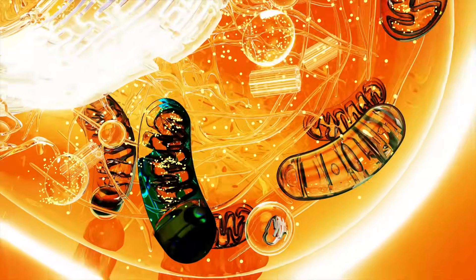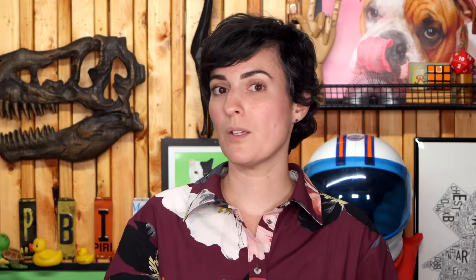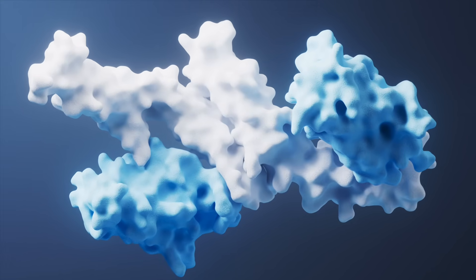But here's the problem: most of the chemical reactions that make life possible happen way too slowly on their own. That's where enzymes come in. Enzymes are proteins that act like tiny biological catalysts. Their job? Speed up reactions by lowering the activation energy. Think of it like reducing the height of a hill so a ball can roll over it with more ease. Without enzymes, your cells wouldn't be able to function fast enough to keep you alive. Now, enzymes are picky. For a reaction to happen, the shape and charge of the substrate — that's the molecule the enzyme works on — has to fit perfectly into the enzyme's active site. It's kind of like plugging in the right charger into your phone. If the shape doesn't match, the reaction just won't happen. This whole interaction is explained by the enzyme-substrate complex model, where the enzyme and substrate bind together, do their job, and then separate so the enzyme can be reused again and again.